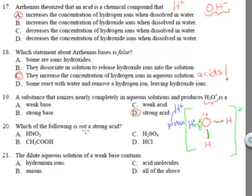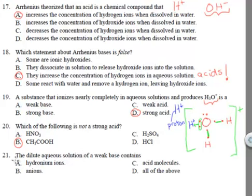Number 20: which of the following is not a strong acid? Nitric acid, sulfuric acid, and hydrochloric acid all ionize completely in solution and are examples of strong acids — these were specific examples given in the notes. Acetic acid — vinegar — is a very common weak acid.